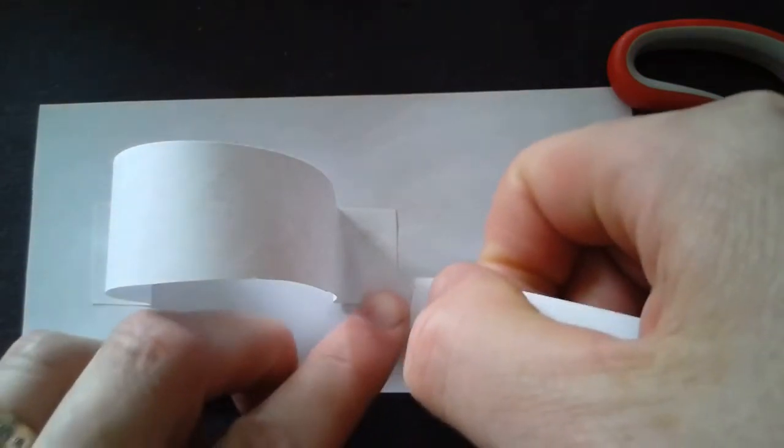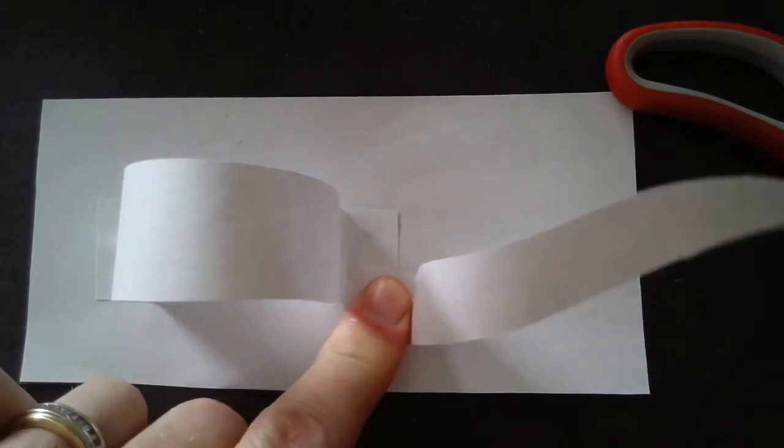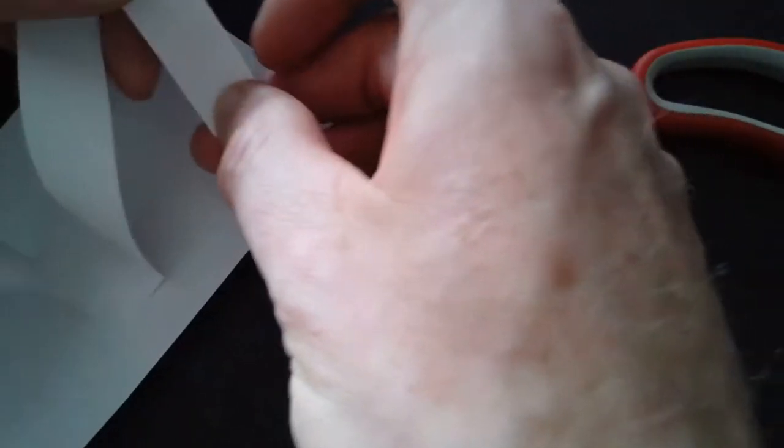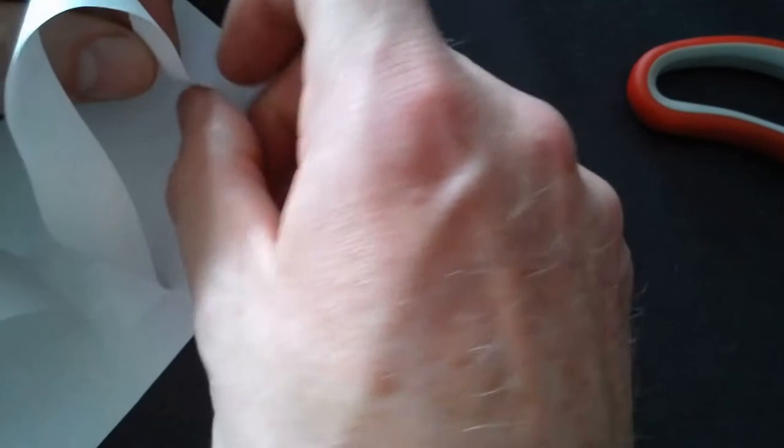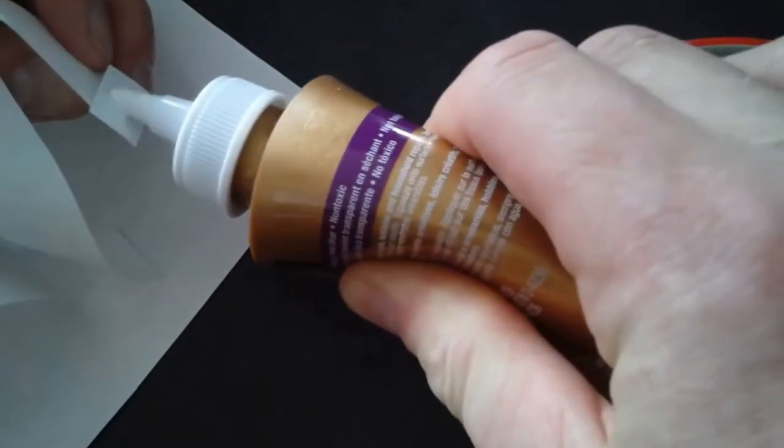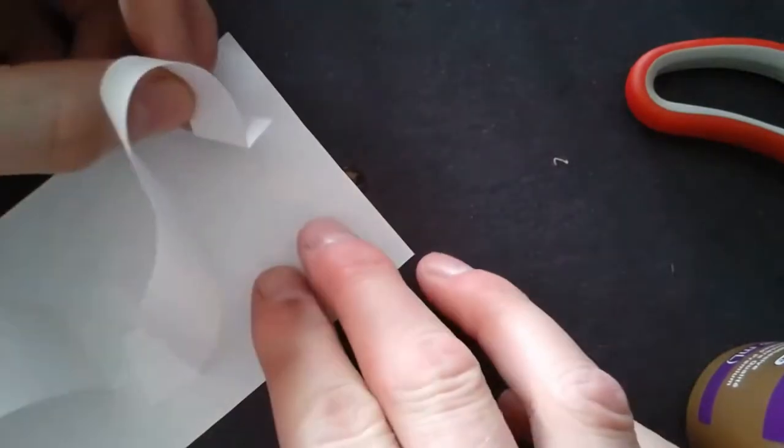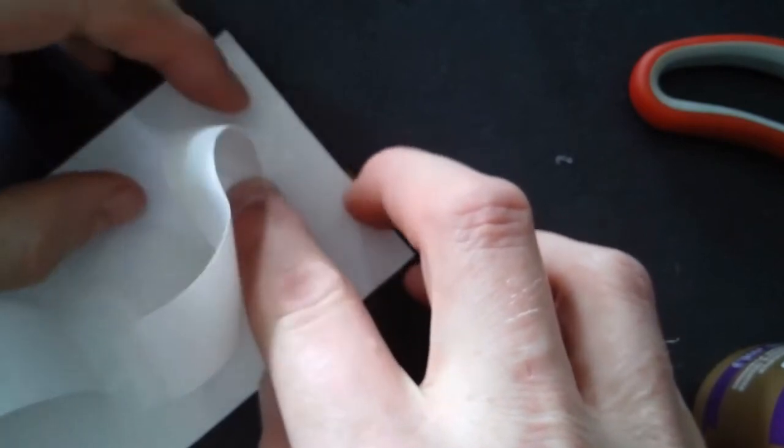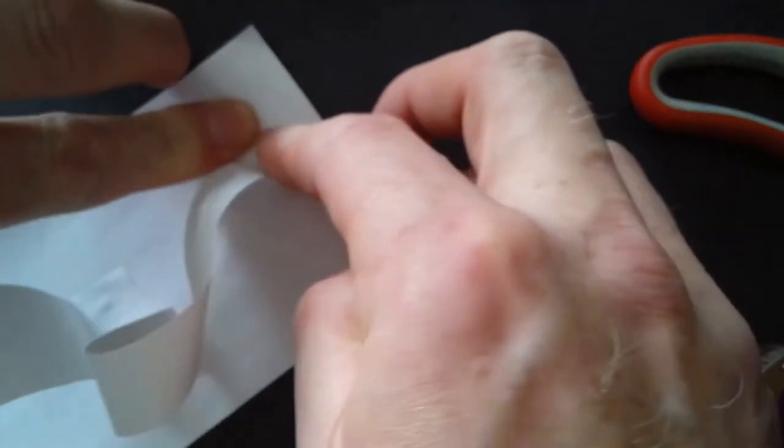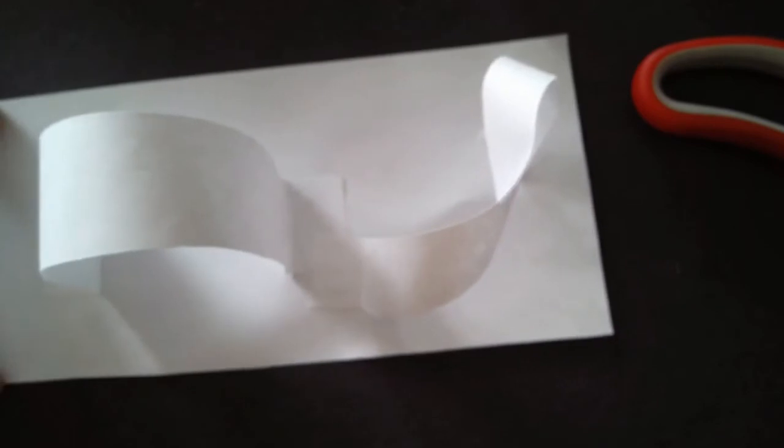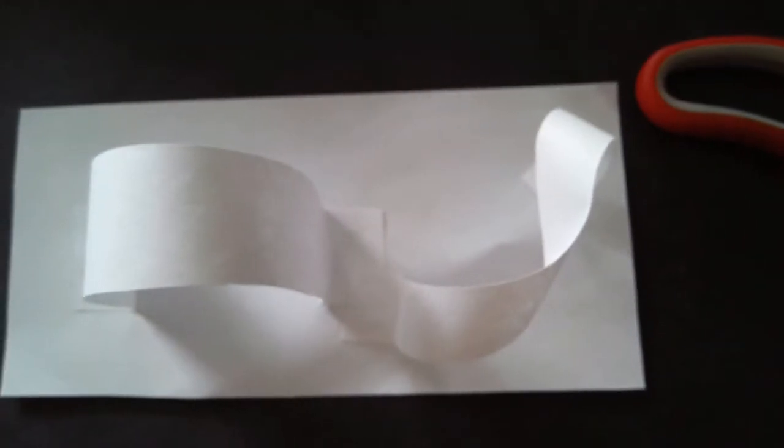And based on how much you're twisting it, you'll bend the tab back where you're going to glue it in place. Once it's been twisted, add a little bit of glue and place it on your table. So that is how to bend and twist.